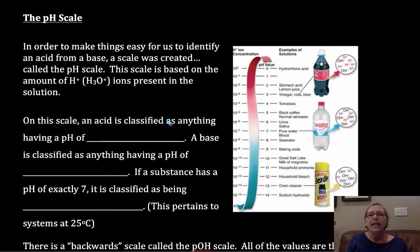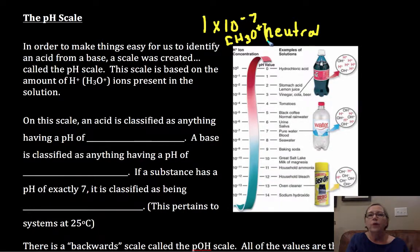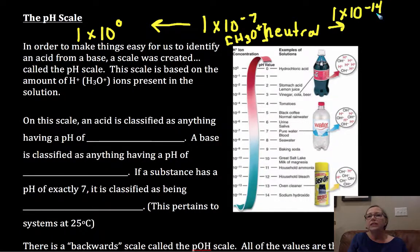We have a scale, and on that scale 1 times 10 to the minus 7 is defined as neutral, and that would be my H3O+ concentration being 1 times 10 to the minus 7. So this scale would then go, it's 1 times 10 to the 0, or 1, and it actually goes negative, though most scales won't show that. And then the other direction it would go 1 times 10 to the minus 14.